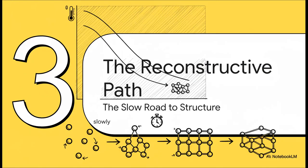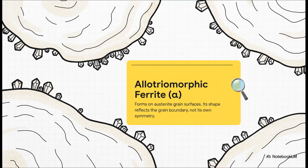Let's follow that first path — the slow road. Imagine we're cooling our steel down very slowly, giving those civilian atoms all the time in the world to move around. This is the reconstructive path, where new structures are built piece by piece. The very first thing that starts to form is allotriomorphic ferrite. It starts to grow right on the edges of the original austenite grains, kind of like crystals forming on the shores of a lake. And because it's a civilian transformation, it's not confined — it can actually grow right across those old grain boundaries.